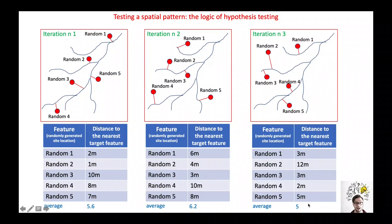The next step is to understand how that measure would vary under the null hypothesis of no association between sites and streams, and to understand how typical or conversely how extreme it would be under the null hypothesis. We can achieve that via a randomized approach, whose first three iterations are summarized in this slide. Using a computer, we draw five random locations within the same area of our observed pattern. For each random location, we calculate its distance to the nearest stream, and then we average those distances, eventually coming up with an average.